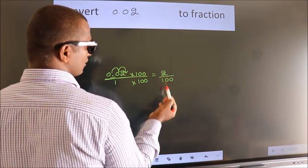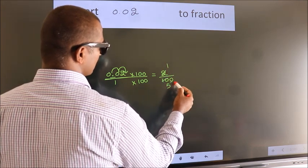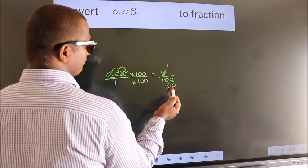Now, I cancel with 2. 2 1s, 2 5s, this 0 as it is down. Cannot be simplified further.